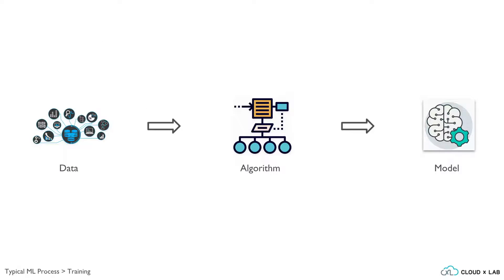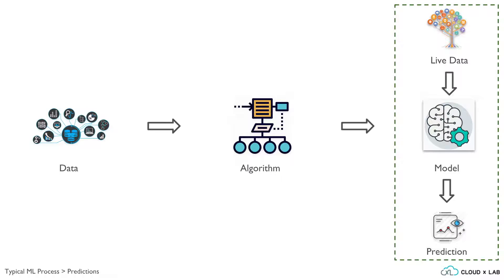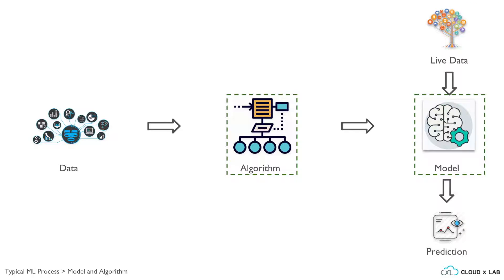In earlier chapters, we learned that we feed the data having instances with features along with the expected output to the algorithm, which generates the model. Then this generated model can predict the output from the live data or the input for which we do not know the labels. But what's there in the algorithm that generates the model? And what does a model mean? Let's try to answer these questions.